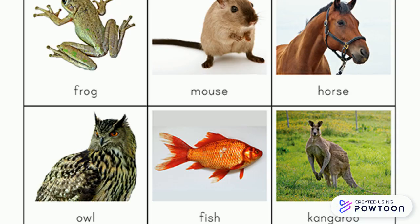Frog, mouse, horse, owl, fish, and kangaroo are some of the examples of vertebrate animals.